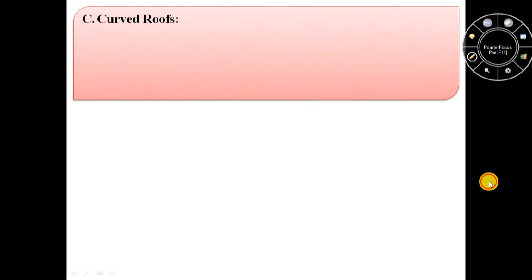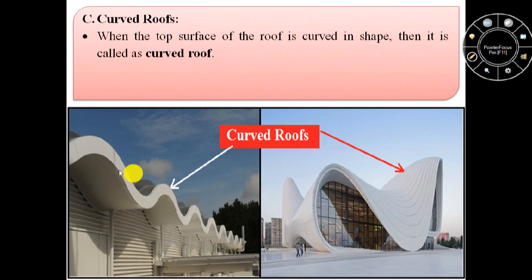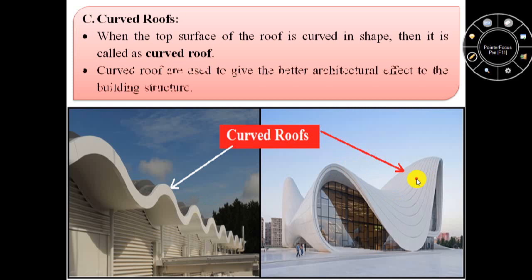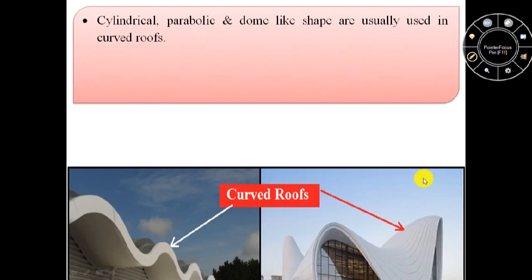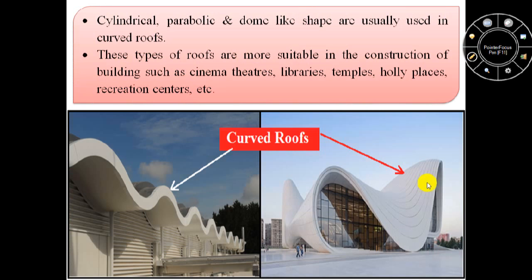The last type of roof is curved roof. When the top surface of the roof is curved in shape then it is known as curved roof. Curved roofs are used to give a better architectural effect to the building structure. Cylindrical, parabolic, and dome-like shapes are usually used in curved roofs. These types of roofs are more suitable in the construction of buildings such as cinema theatres, libraries, temples, holy places, and recreation centres.